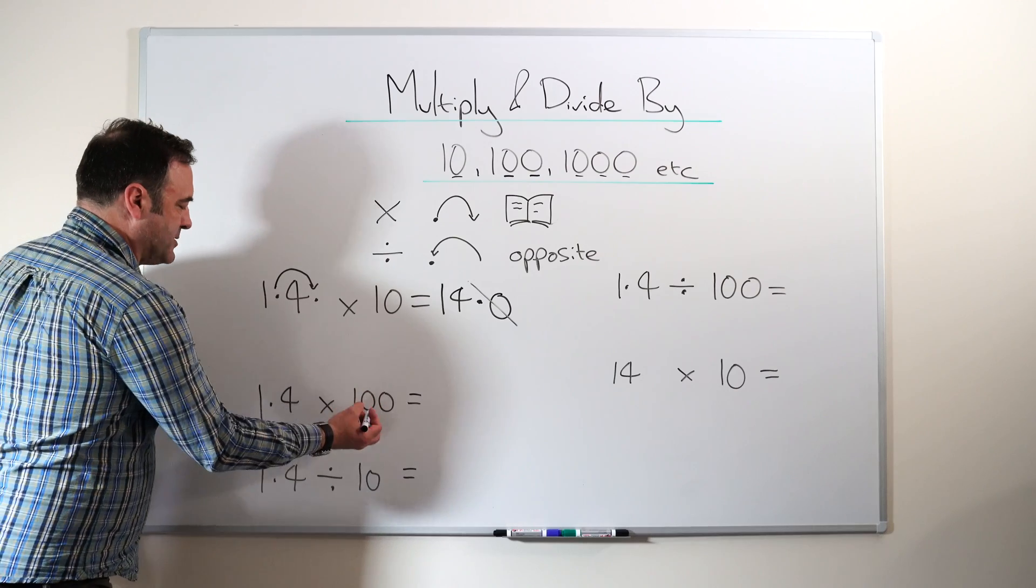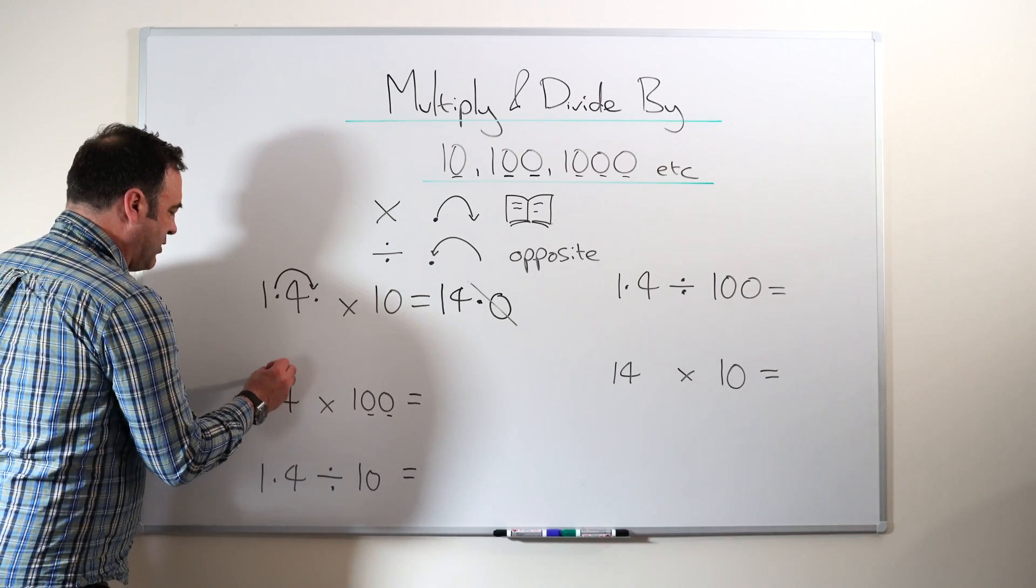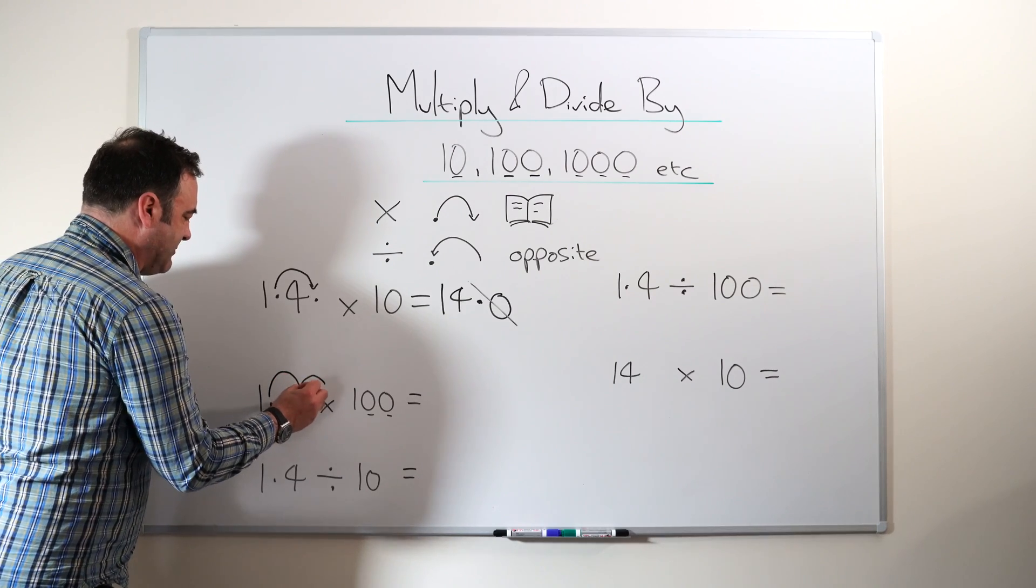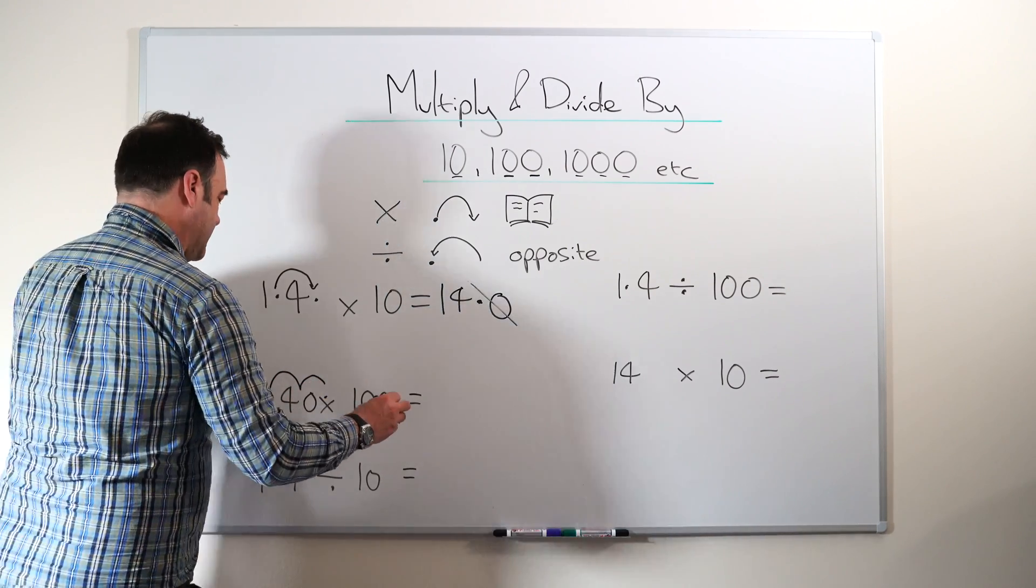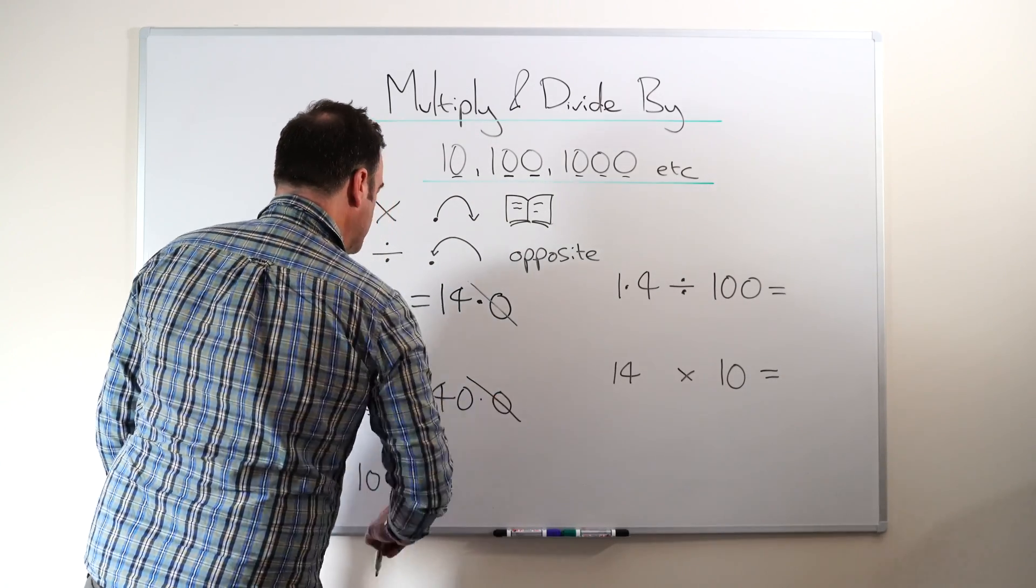1.4 times 100, two jumps. Now this is an interesting case. When you run out of numbers to jump over, you simply add a zero. So it becomes 40 point zero, or 40.